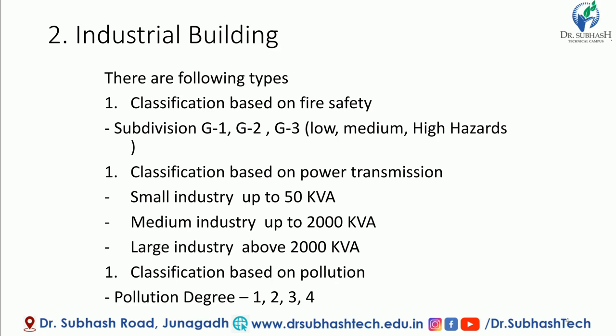Next is classification based on pollution — how much the environment is affected due to industrial operation. This may be classified depending upon the pollution degree: Pollution Degree 1, 2, 3, and 4, similar to the fire safety classification. This concludes the industrial building classification.